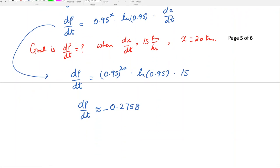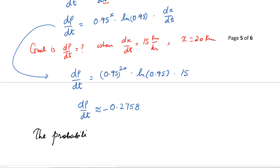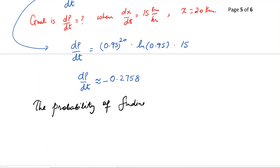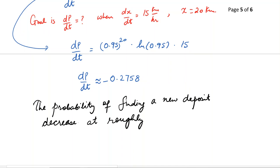Thus, the probability of finding a new deposit decreases at roughly 27.58 percent per hour. The negative sign indicates the decrease. This is exactly what we were trying to find in this problem.